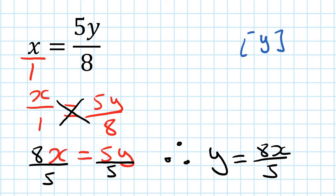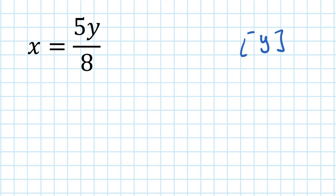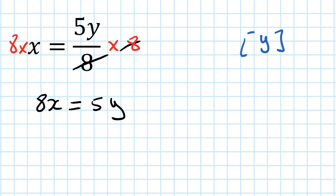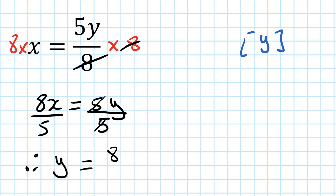There's a second way to do this: multiply both sides by 8 to get rid of the denominator first. So x times 8 is 8x, and the 8 cancels on the right, leaving 5y. Then divide by 5 on both sides. Therefore y equals 8x over 5. Some people prefer one method, some prefer the other — just pick one and stick to it.